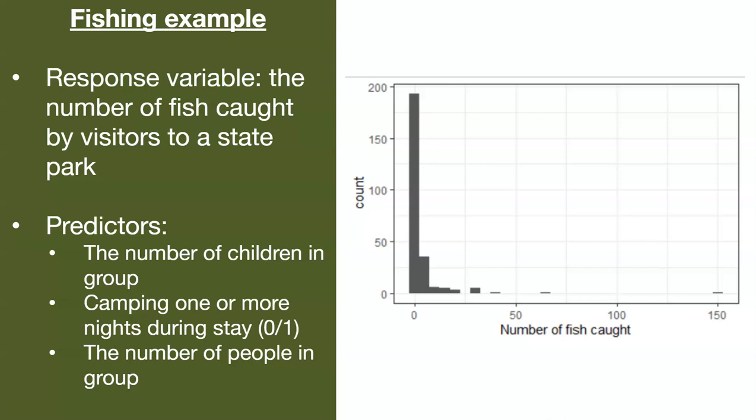We'll work through one example looking at fishing. What we have here is a data set of a bunch of campers that went out and caught fish. After they caught those fish in a state park, we asked them how many fish they caught. You see here the number of fish caught on the x-axis and the number of times we observe different numbers of fish being caught.